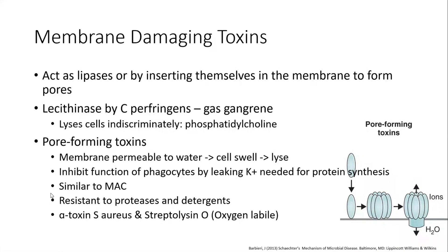When pore-forming toxins are inserted into macrophages, they inhibit phagocyte function by leaking potassium needed for protein synthesis. This mechanism is essentially very similar to our membrane attack complex. These toxins are resistant to proteases and detergents. Examples of pore-forming toxins include alpha toxin by Staphylococcus and streptolysin O by Streptococcus. Streptolysin O binds cholesterol in the cell membrane and lyses red blood cells but not neutrophils or macrophages. It also acts preferentially on lysosome membranes, releasing hydrolytic enzymes that damage white blood cells leading to apoptosis.